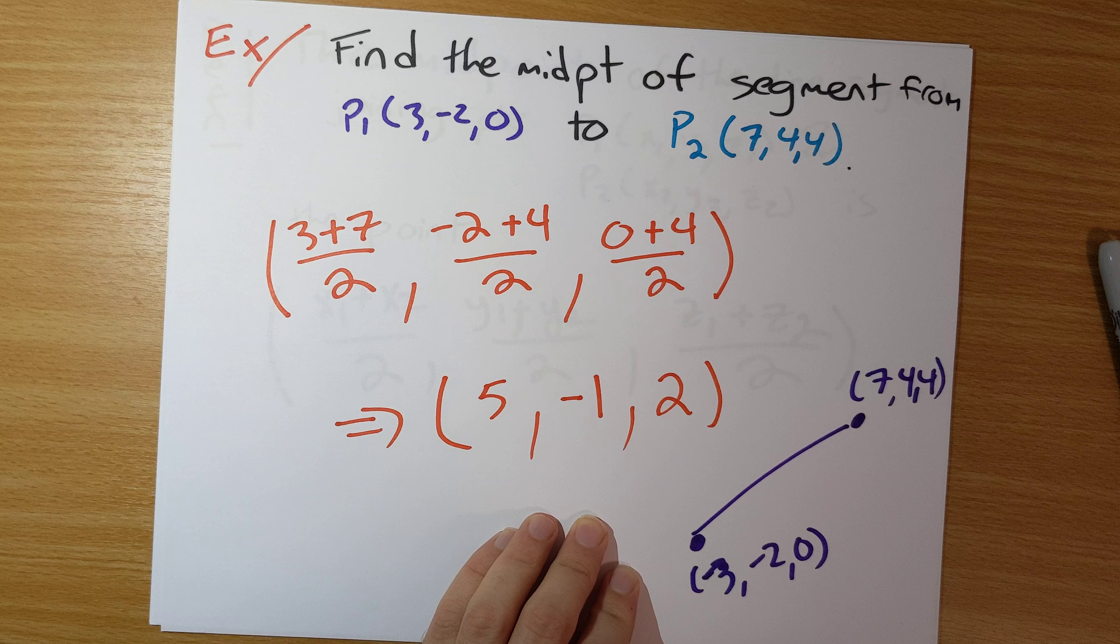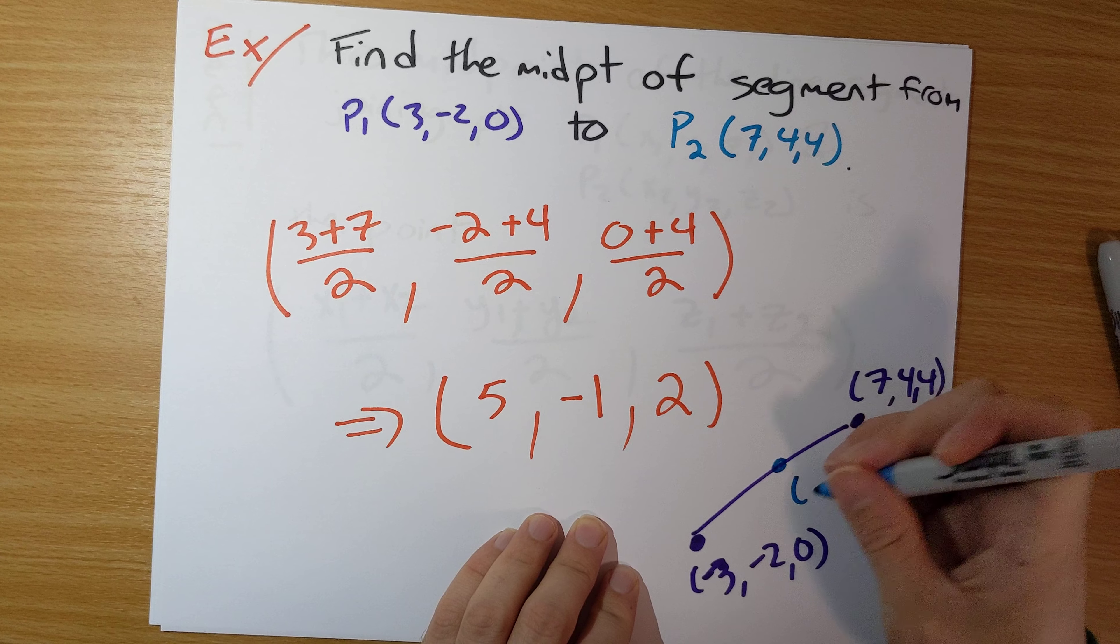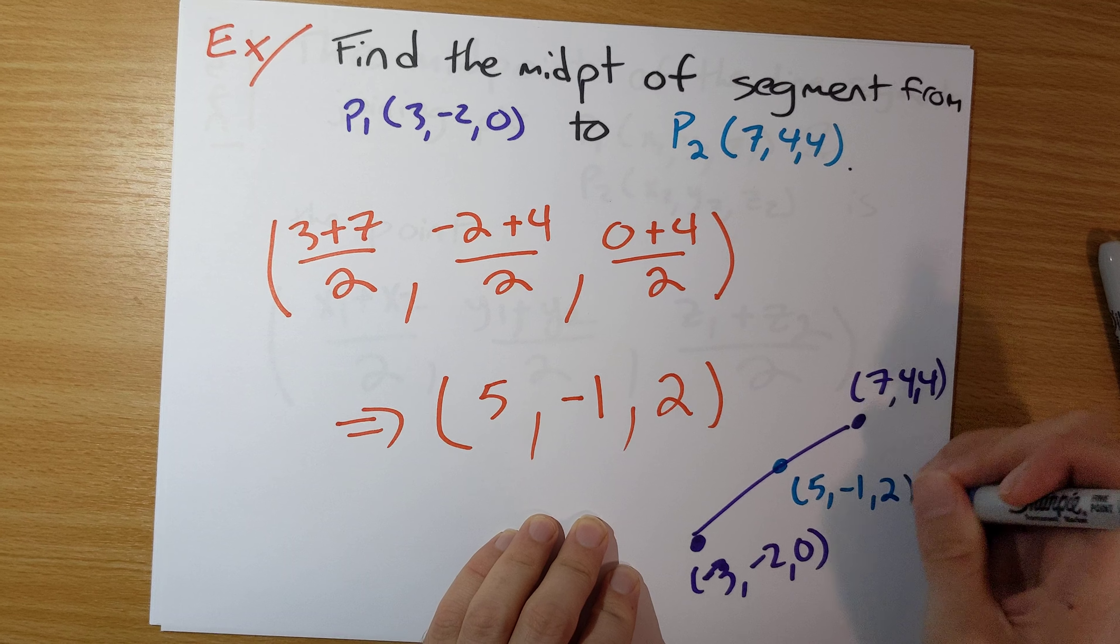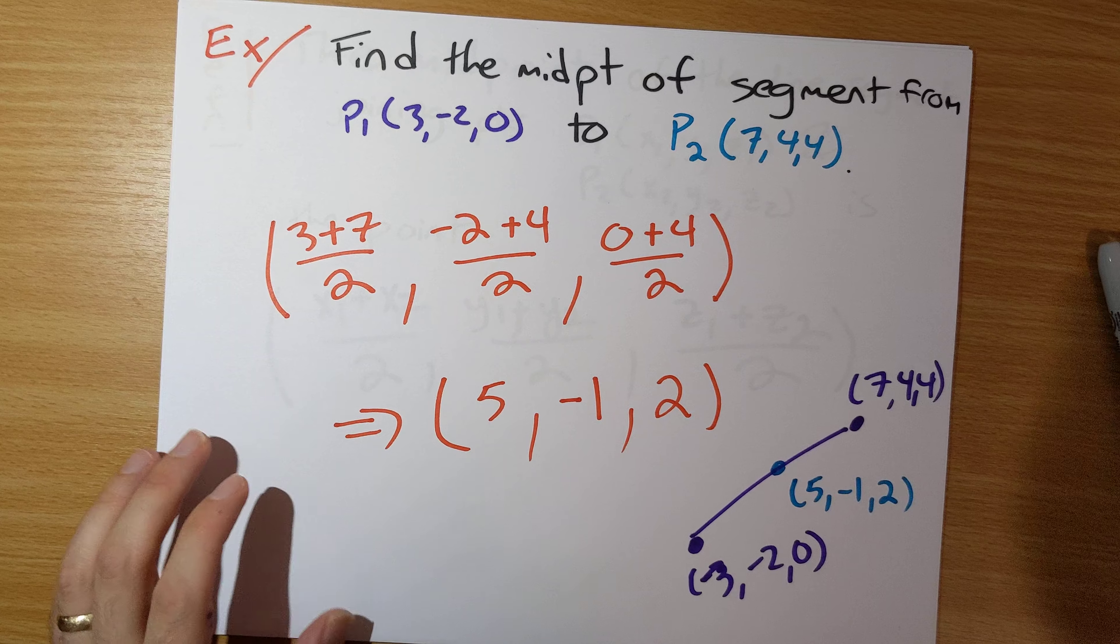halfway in between, you'll be at the point 5, negative 1, 2. That's all that's going on here.